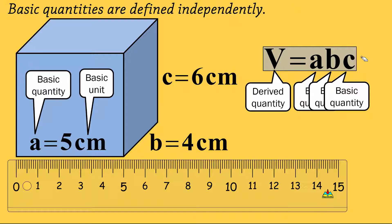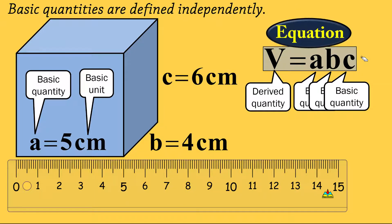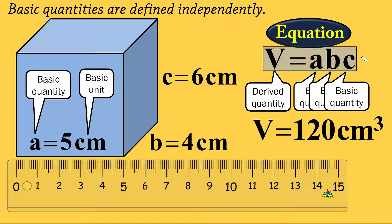Volume is expressed in terms of basic quantities — to define volume I must know what length is, but to understand length I do not need to know what volume is. This is why a, b, and c are basic quantities while volume is a derived quantity. The relationship between quantities is expressed by an equation. I must have an equation to define the relationship between derived and basic quantities. The volume here is 120 cubic centimeters, and its unit — cubic centimeters — is a derived unit.